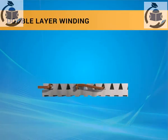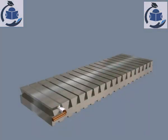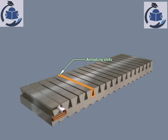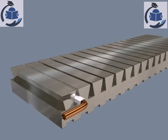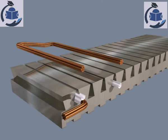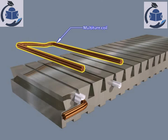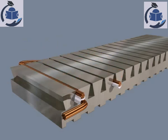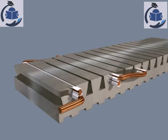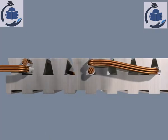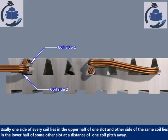In double layer winding, we are seeing the winding pattern of a two-layer winding of an armature slot. In this type of winding, there are two conductors or coil sides per slot, arranged in two layers. A multi-turn coil has coil side one and coil side two. Usually, one side of every coil lies in the upper half of one slot.